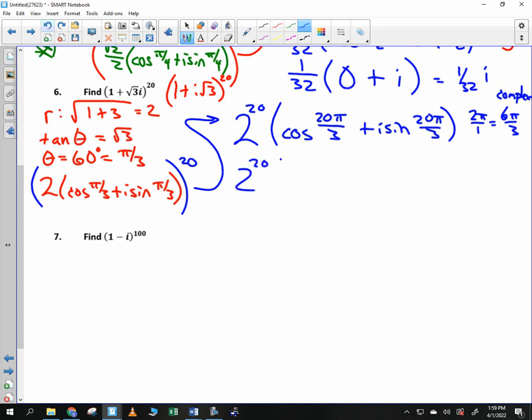So you have 2 to the 20th times the cosine of 2 pi over 3 plus i sine of 2 pi over 3. And that is trig form. I don't really want to write out 2 to the 20th power, do you? That's a large number. Let's leave it expressed in a smaller fashion.